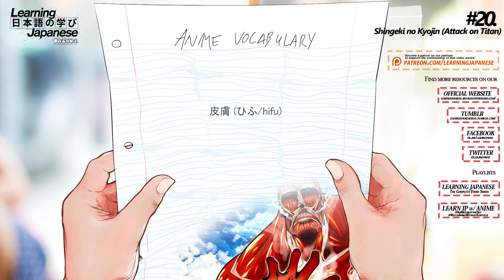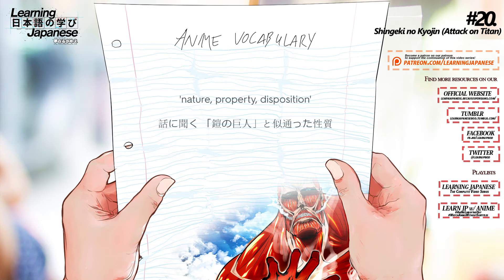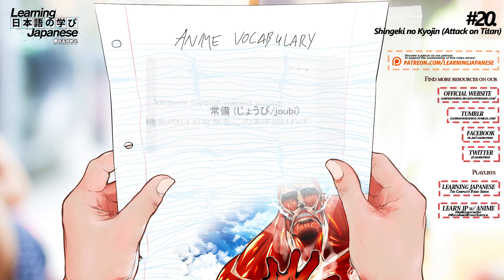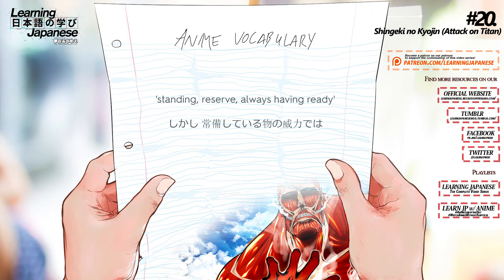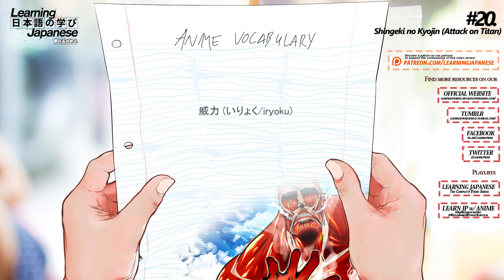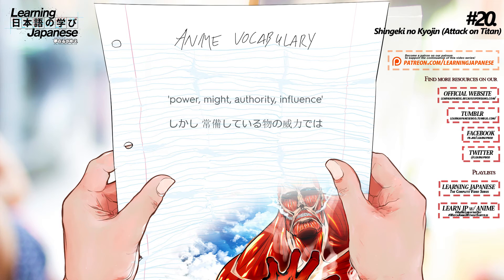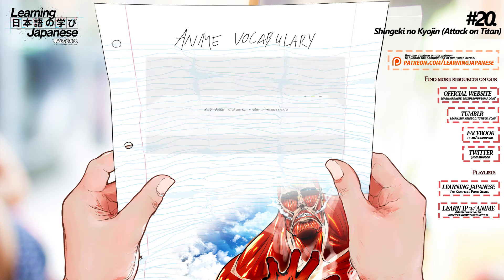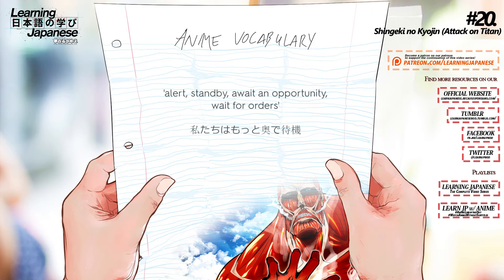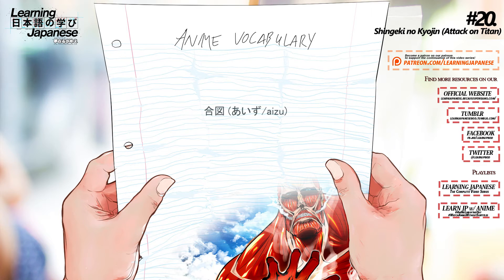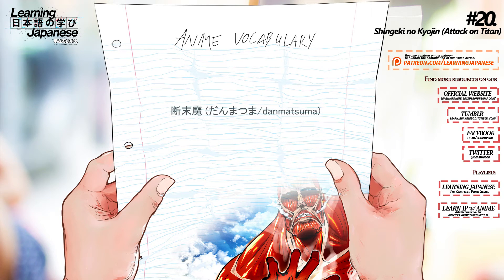皮膚 (hifu) — Skin. 性質 (seishitsu) — Nature, property, disposition. 白刃 (hakujin) — Drawn sword, naked sword. 常備 (joubi) — Standing reserve, always having ready. 威力 (erioku) — Power, might, authority, influence. 待機 (taiki) — Alert, standby, await an opportunity, wait for orders. 合図 (aizu) — Sign, signal.